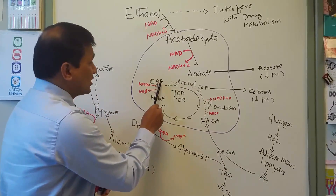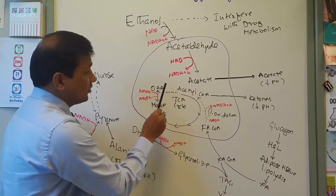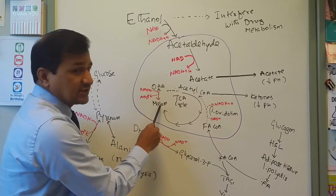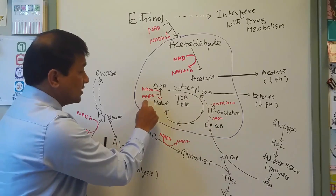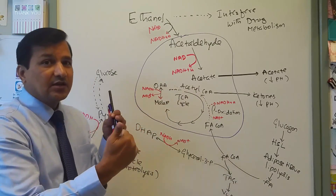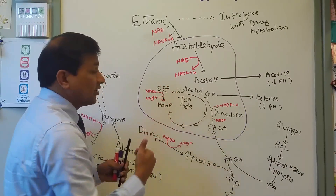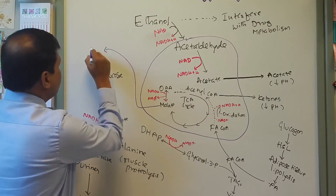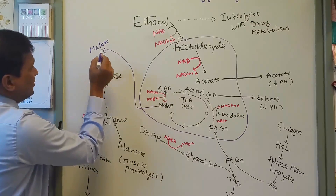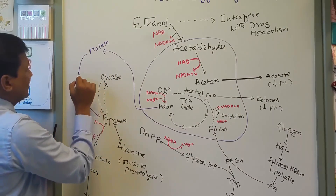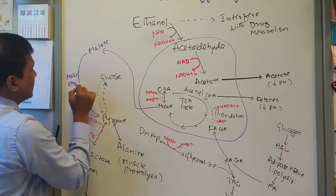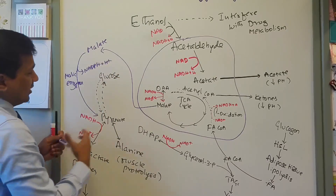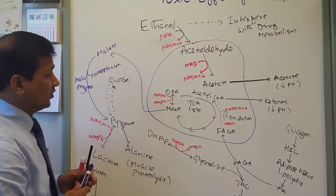Because there is plenty of NADH+H+ in the mitochondrial matrix, the TCA cycle reaction of malate to oxaloacetate is reversed — oxaloacetate goes into malate to regenerate NAD+. This malate moves out of the mitochondria into the cytoplasm, where the malic enzyme converts malate back into pyruvate, producing NADPH+H+. Pyruvate will then have a different fate, which we will look at shortly.